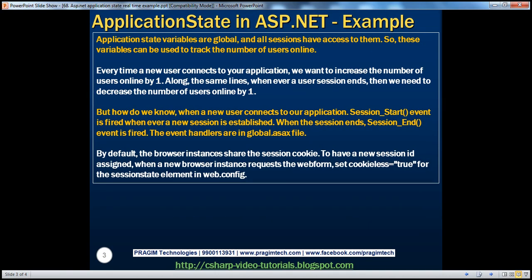Application state variables are global and all sessions have access to them. So these variables can be used to track the number of users online. You might have seen many applications where, when you log in, they show a message stating the number of users online at this time. Let's see how to do exactly the same thing using application state variables.